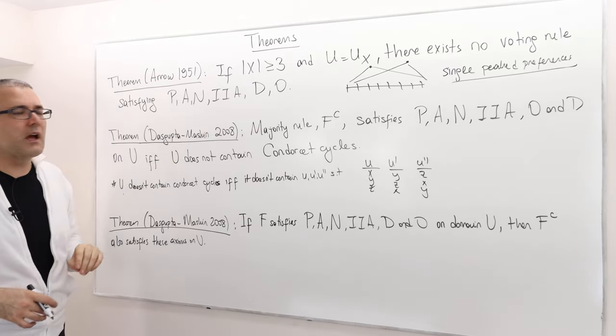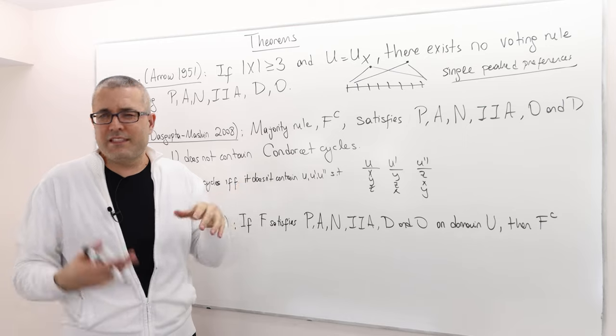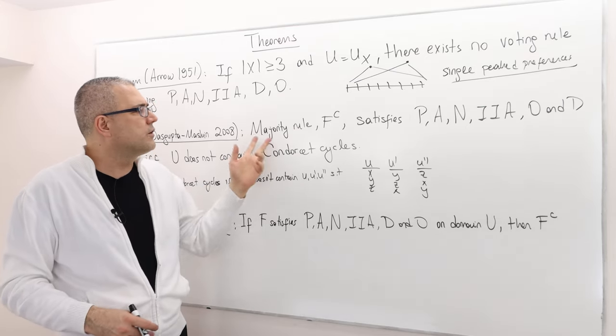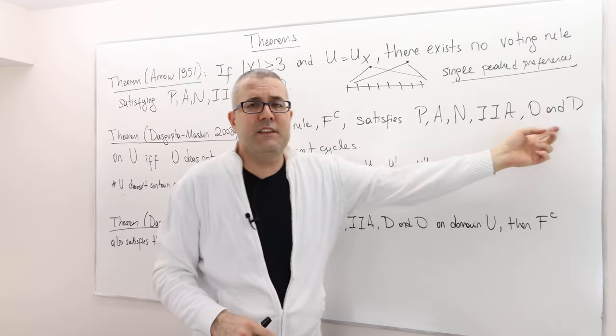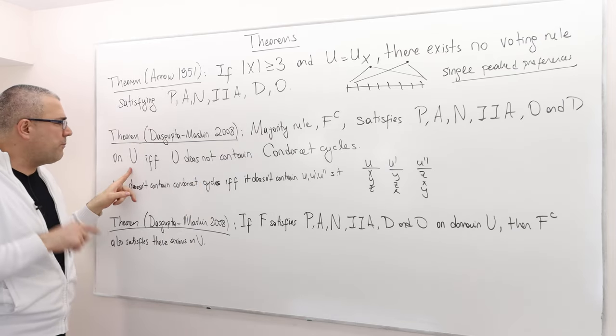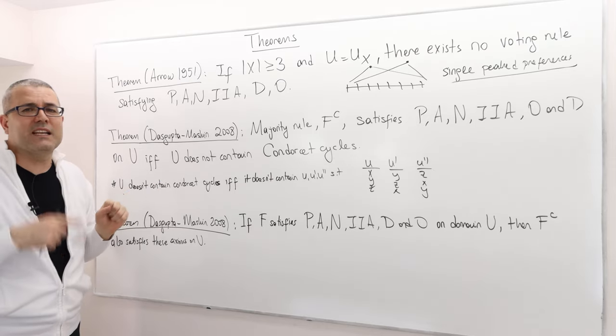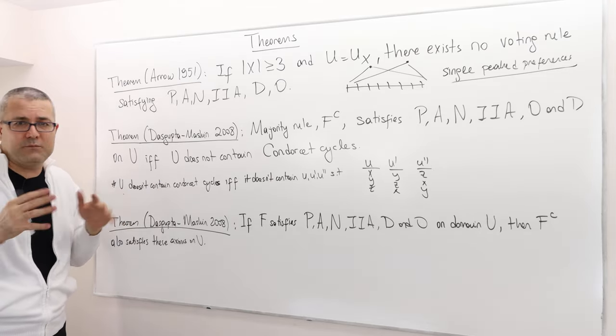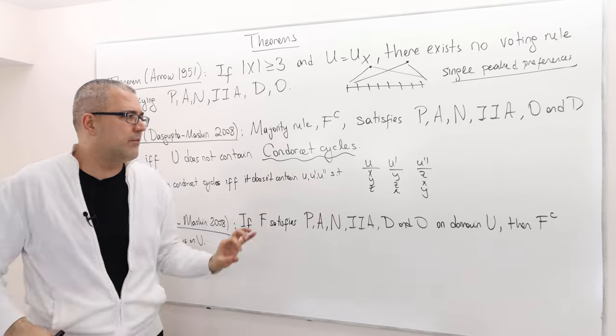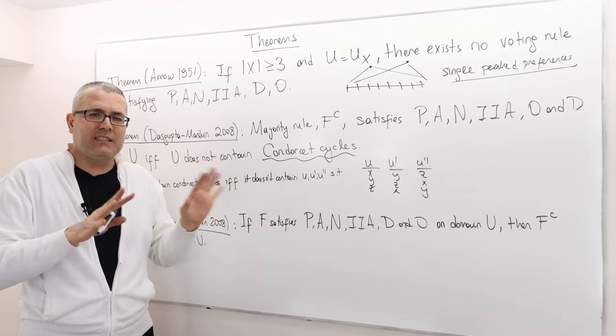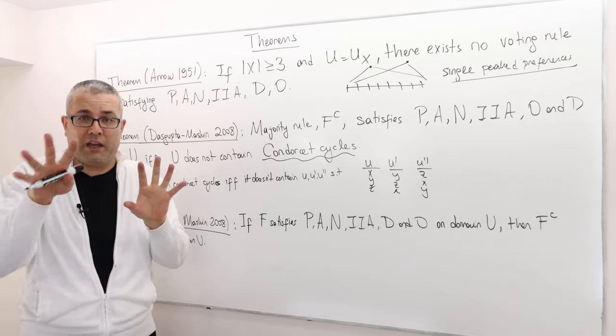I'm going to mention two results. The first one says the following: the majority rule FC, the C corresponds to Condorcet, satisfies all six axioms on domain U if and only if U does not contain Condorcet cycles. I don't know what that means because I haven't talked about Condorcet cycles yet, which I will at the end with an example.